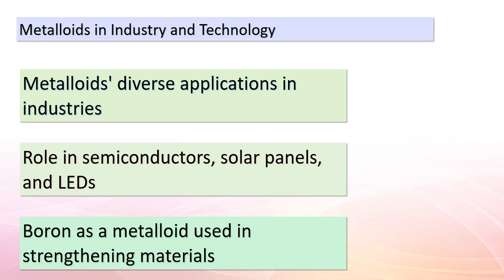As we continue our exploration of metalloids, let's delve into their real-world applications. These elements play a crucial role in a variety of industries and technologies. Semiconductors — used in everything from computers to solar panels to LED lighting — rely on the unique properties of metalloids. Boron finds its place in strengthening materials, making them more durable. Antimony is employed in flame-retardant materials, enhancing safety in various products. Metalloids truly showcase their versatility by contributing to advancements across different fields.